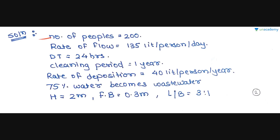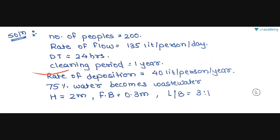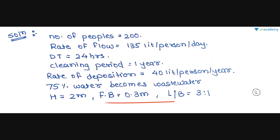Number of people given is 200. Rate of flow is 135 litres per person per day. Detention time is given as 24 hours. Cleaning period is 1 year. Rate of deposition is 40 litres per person per year. 75% water becomes wastewater, so the factor is 0.75. H is equal to 2 metres, free board (FB) is equal to 0.3 metre, and L to B ratio is 3:1.